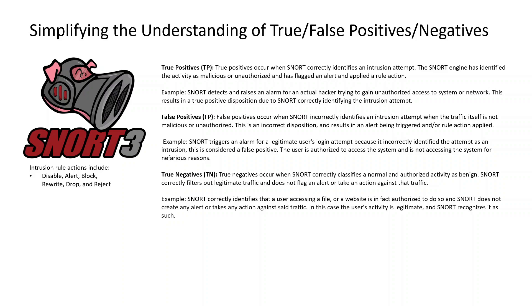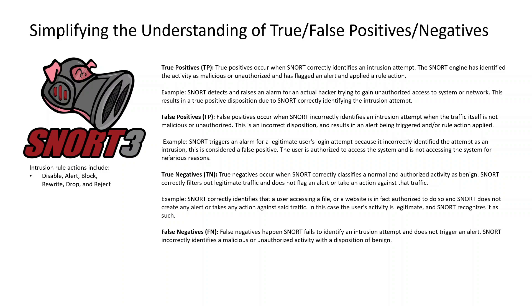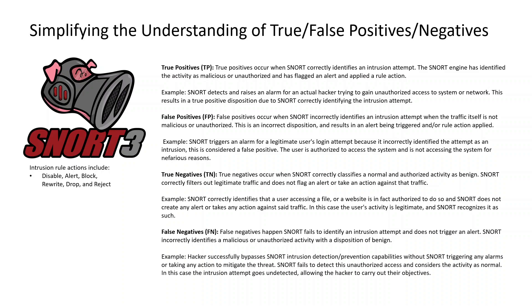False negatives happen when Snort fails to identify an intrusion attempt or trigger an alert. Snort incorrectly identifies malicious or unauthorized activity with a disposition of benign. For example, a hacker successfully bypasses Snort's intrusion detection and prevention capabilities without triggering any alarms. Snort fails to detect the unauthorized access and considers the activity normal — the intrusion goes undetected, allowing the hacker to carry out their objectives.